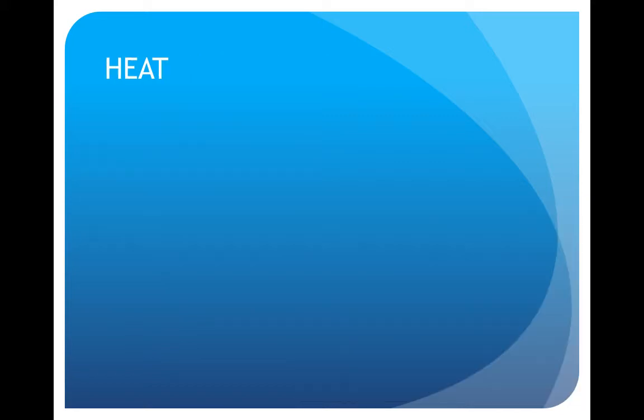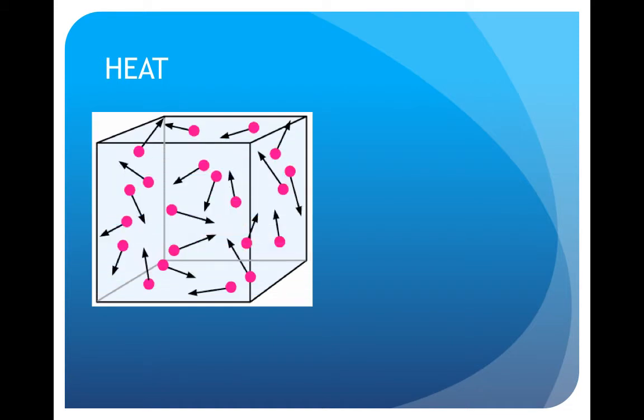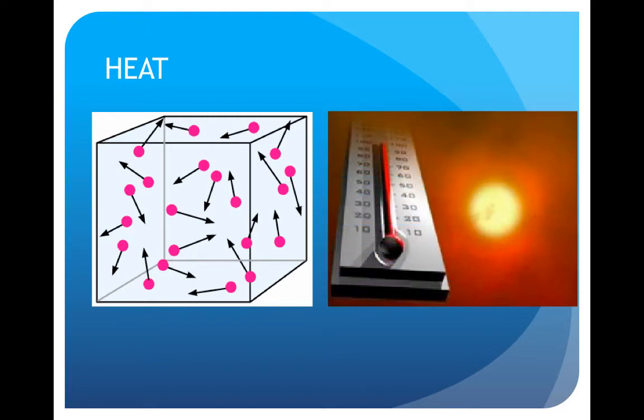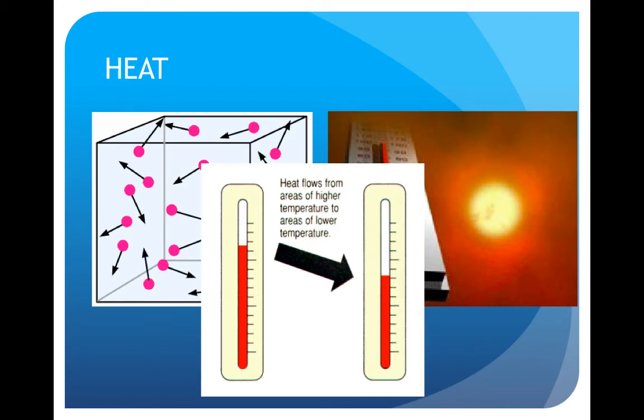Heat is the amount of kinetic energy associated with the movement of the atoms and molecules in a body of matter. Temperature measures the intensity of heat or the average speed of molecules, not the total amount of heat in a body of matter. Heat always passes from warmer to cooler matter.